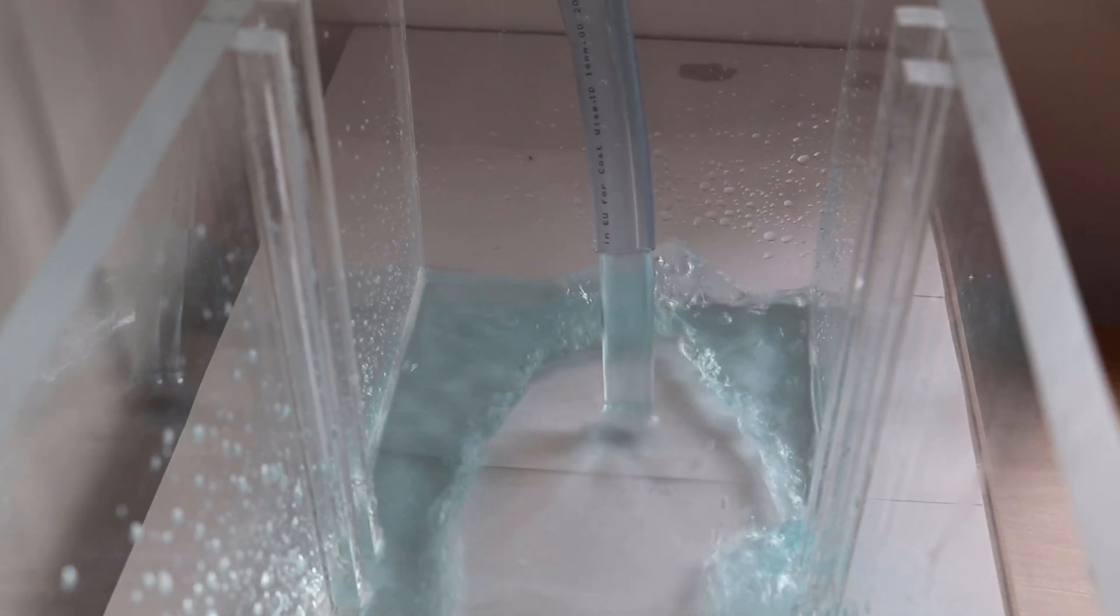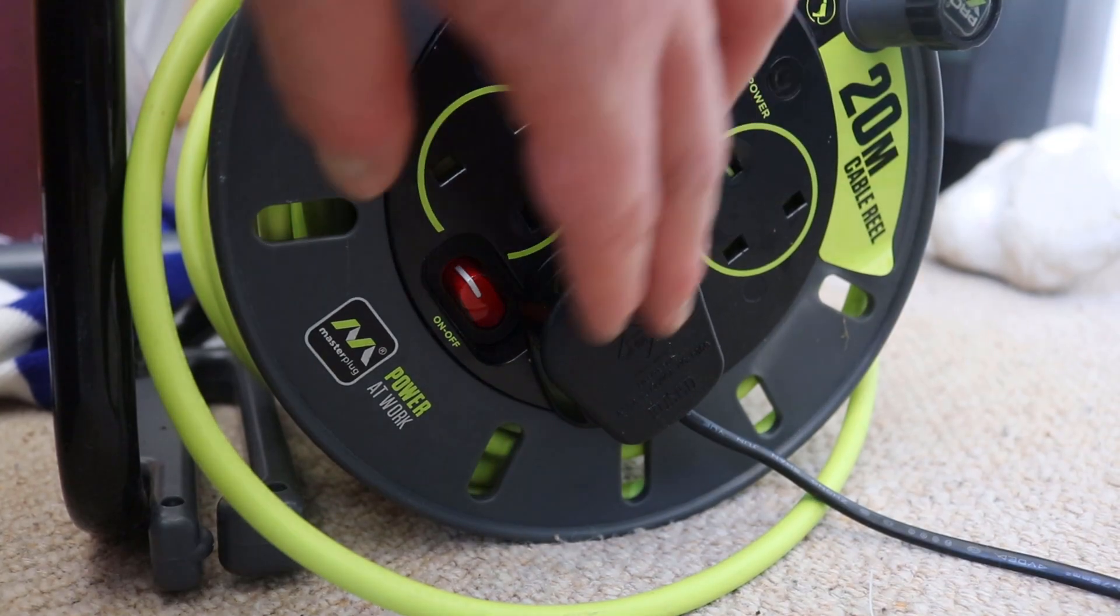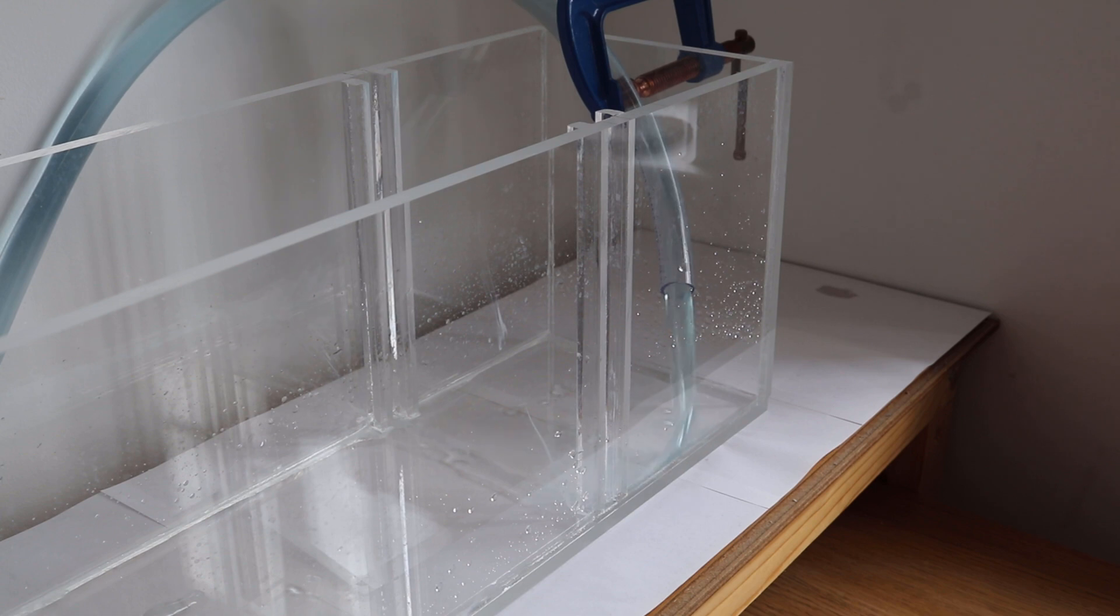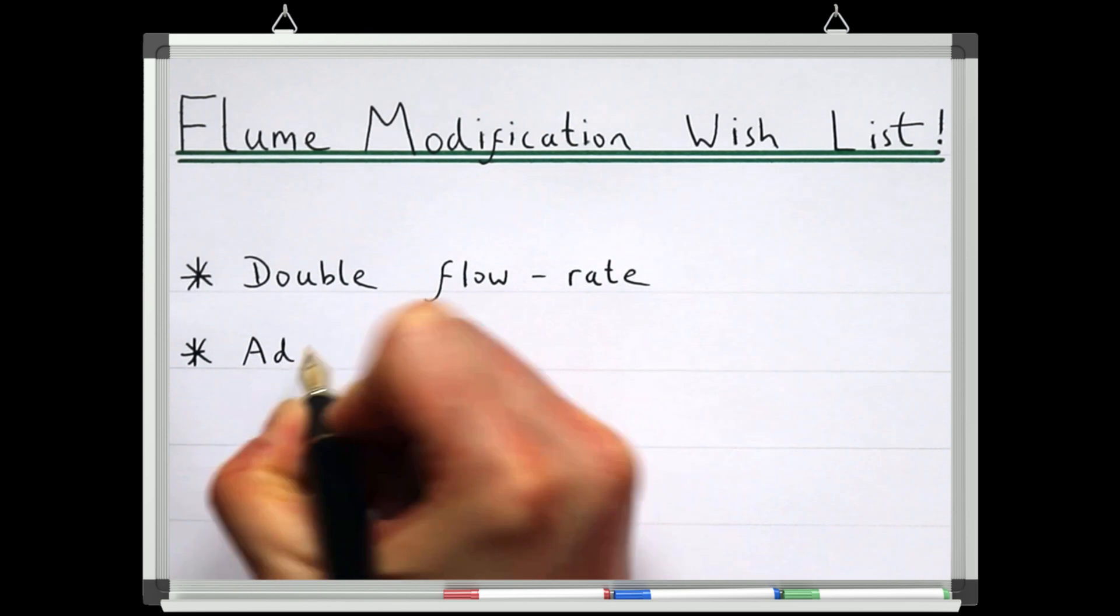Secondly, the flume is currently either on or off. The only control I have is the power switch that goes to the pump, so this means I can only work with one flow rate, which is pretty limiting. So I want to be able to adjust the flow rate.